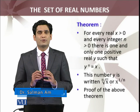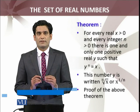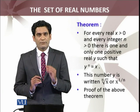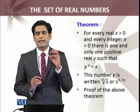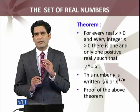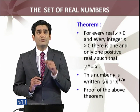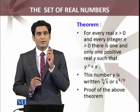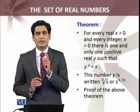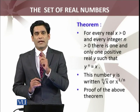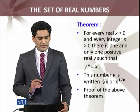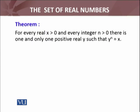This number y is written as the nth root of x, or x raised to power 1 over n. Now I am going to prove this statement rigorously. Informally, I have told you that for any positive real number x, you will be able to find a unique real number y greater than 0 such that y raised to power n equals x. I am going to prove that statement formally.